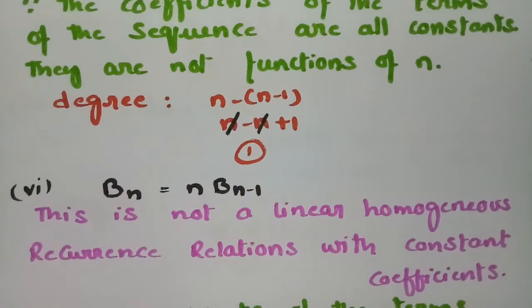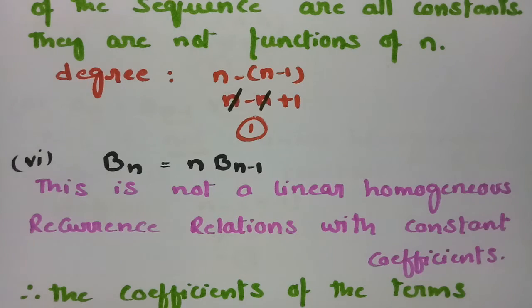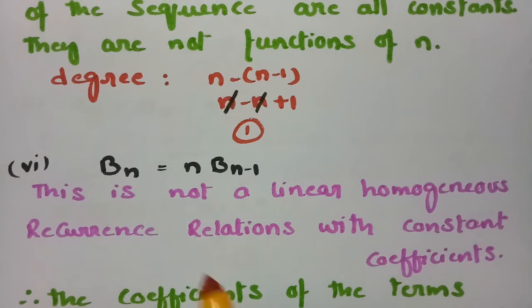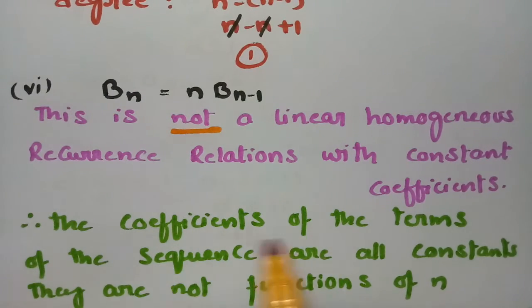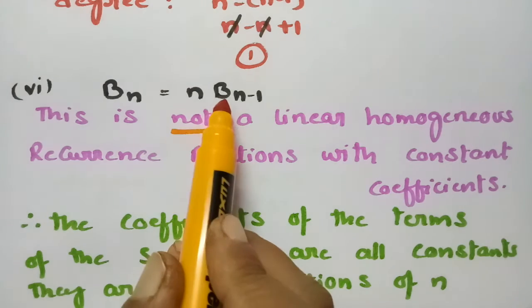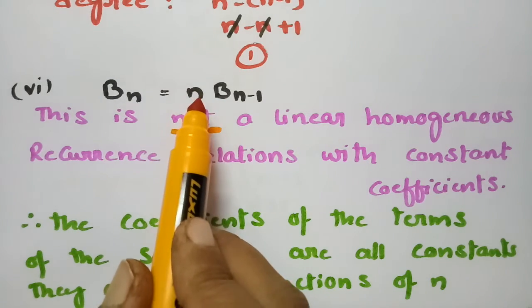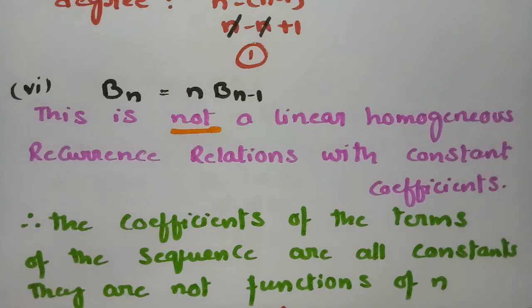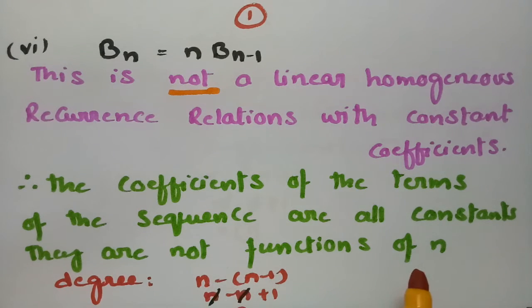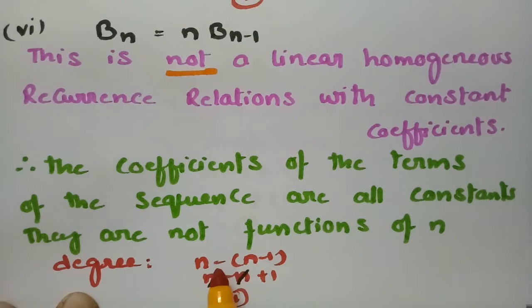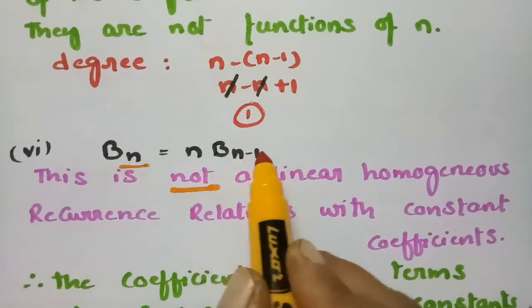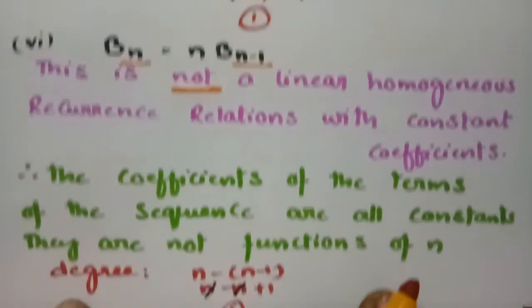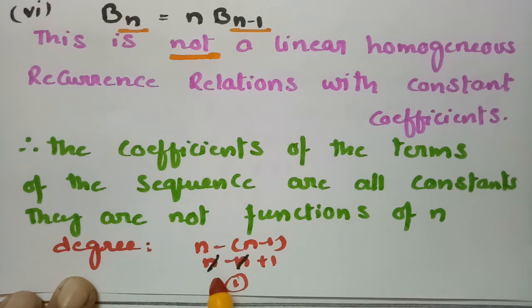The next example is bₙ = n·bₙ₋₁. This is not a linear homogeneous recurrence relation with constant coefficients, since the coefficient n is a function of n and not a constant. The degree is the difference between the greatest subscript n and the least subscript n−1, so the degree is equal to 1.